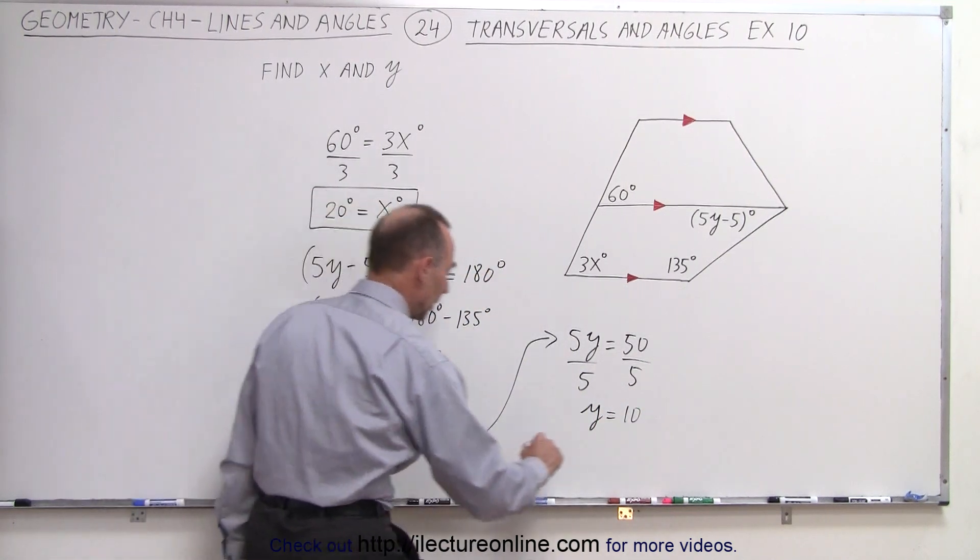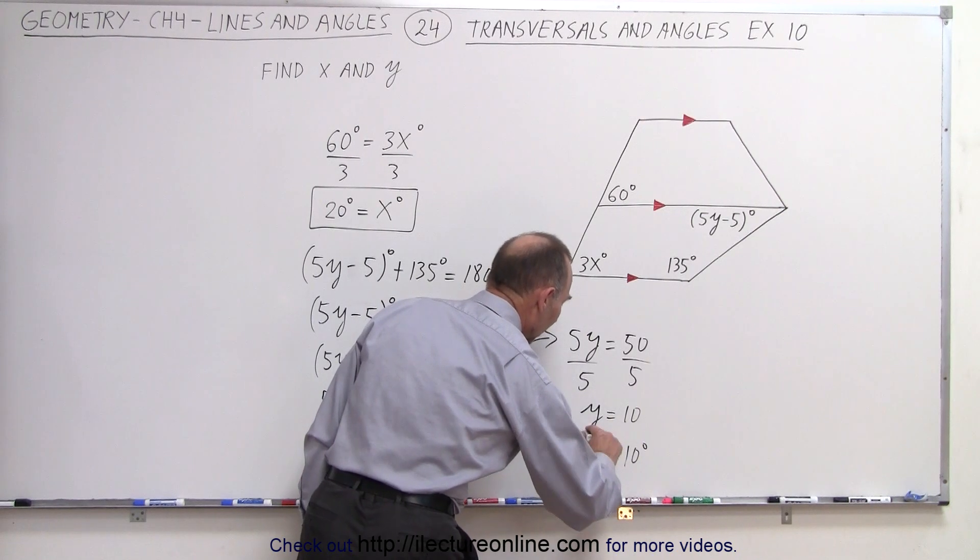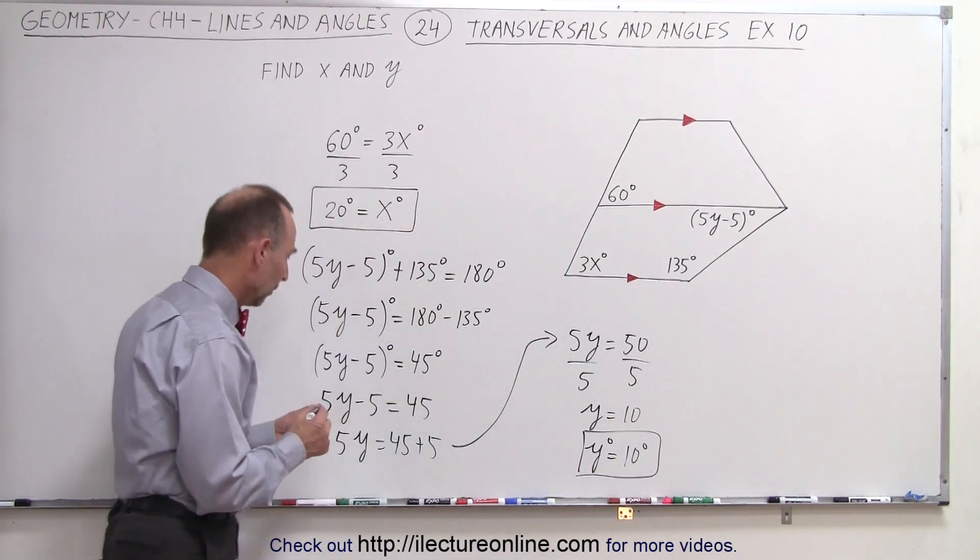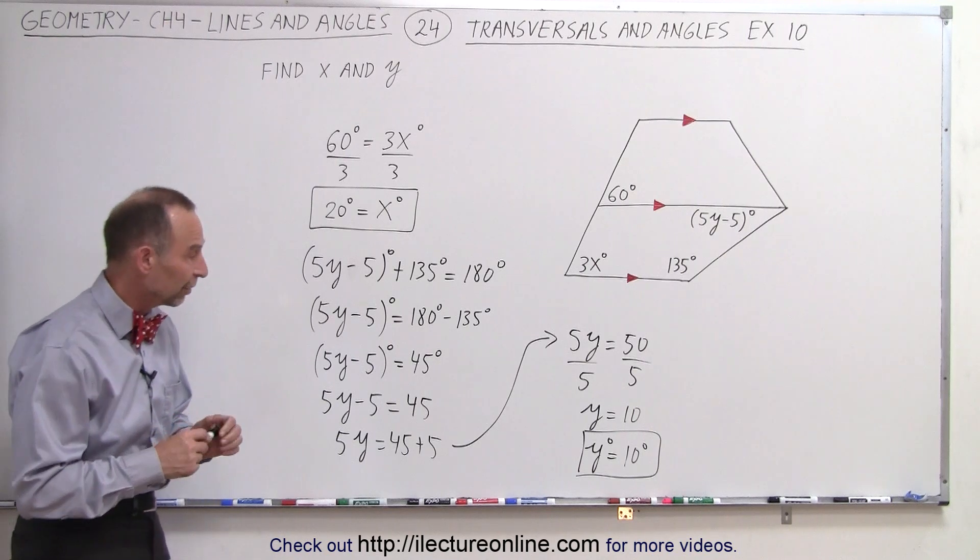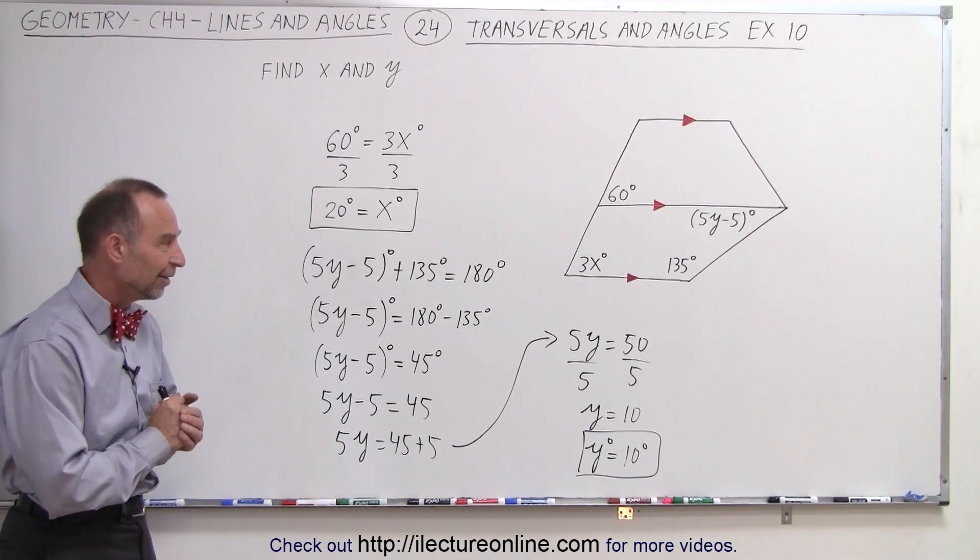And if we then put the degrees back on, we can say that y degrees equals 10 degrees. And so there's the other relationship. So that's how we find both the values for x and the value for y. And that is how it's done.